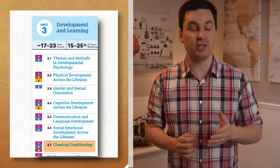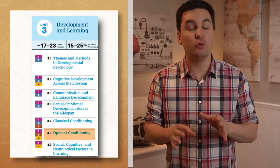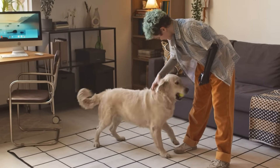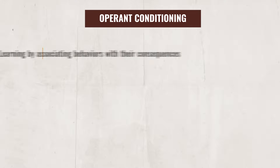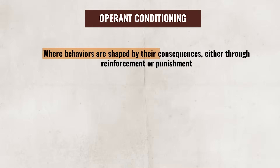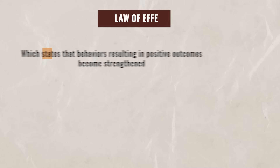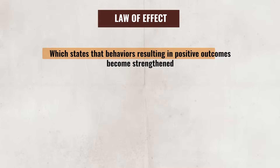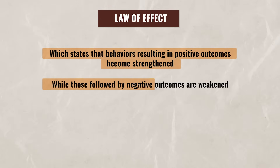Last time we talked about classical conditioning, and today we continue our conversation by expanding our review to operant conditioning. Classical conditioning is all about learning to associate two stimuli together to elicit a response. Operant conditioning, on the other hand, is all about learning by associating behaviors with their consequences. Operant conditioning has its roots with BF Skinner, who was a behaviorist. Skinner believed that individuals would be more likely to do certain behaviors when they received certain reinforcements, and would be less likely when they were punished. So operant conditioning is a type of learning where behaviors are shaped by their consequences, either through reinforcement or punishment. This idea can be seen when looking at the law of effect, which states that behaviors resulting in positive outcomes become strengthened, while those followed by negative outcomes are weakened.